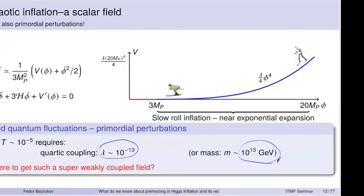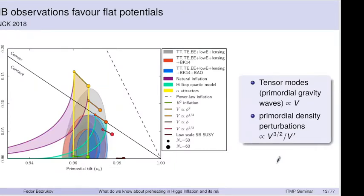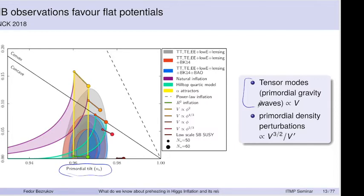Going further, you can calculate the properties of perturbations generated during inflation and observed in the CMB in more detail. One property is amplitude; another is the dependence on momentum — the spectral index — which is close to one. There's also another interesting parameter: quantum fluctuations of the gravitational field — primordial gravitational waves, so-called tensor modes — which you will also see in the CMB.